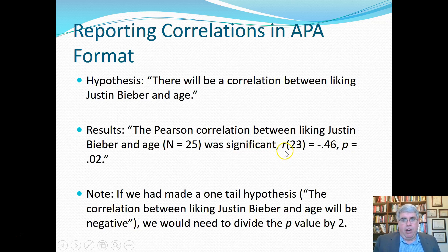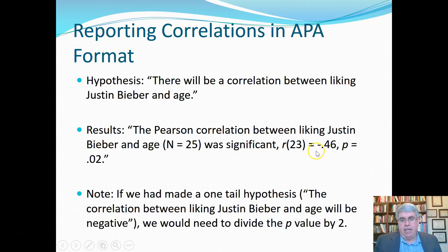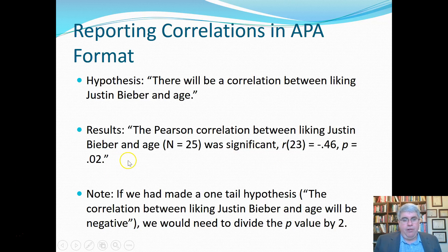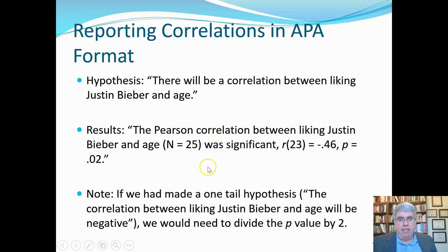We report our R statistic in italics, and we always put the degrees of freedom right after it. So R in italics, then in non-italics we have parentheses 23, space equals space minus 0.46, then a comma, then our p-value in italics with spaces before and after the equal sign — 0.02 — and then a period at the end of the sentence. So that's how we report our results in APA format.